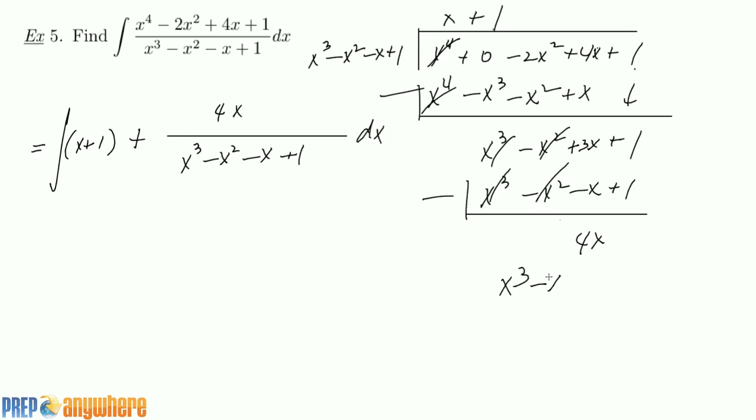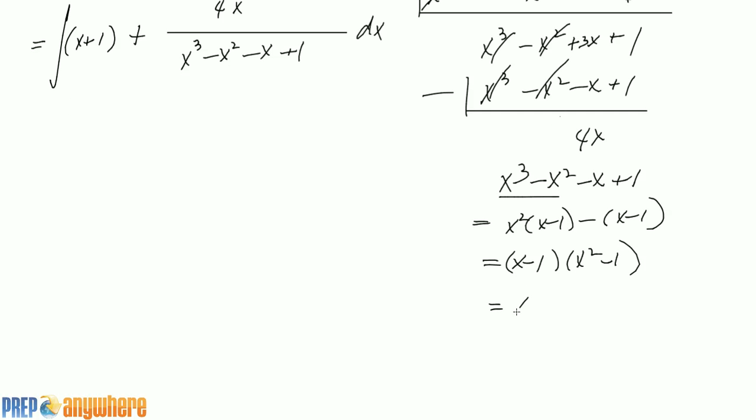So x cubed minus x squared minus x plus 1, factor x squared minus 1, and you get x squared minus 1. So you get x minus 1 times x minus 1 times x plus 1, so x minus 1 squared times x plus 1.